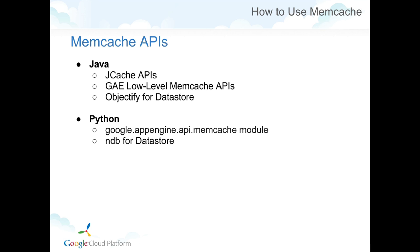How do we use Memcache? In Java, you can use the high-level JCache API, which is a Java standard for caching services. App Engine implements most of the JCache API, and developers who choose it are mainly interested in application portability. Many developers choose the lower-level Memcache APIs to access extra functionality such as byte operations, automatic counter manipulation, and synchronized core. Some developers use a third-party library like Objectify for Datastore, which uses Memcache internally. For Python, you can use the lower-level Memcache module, which has similar syntax to the open-source Memcached, or use NDB for Datastore.